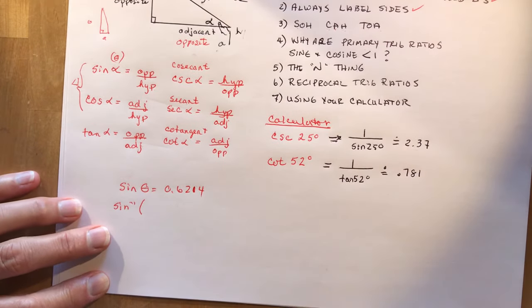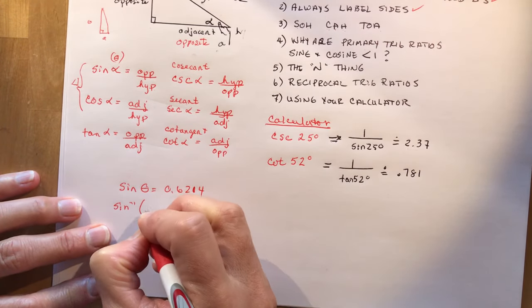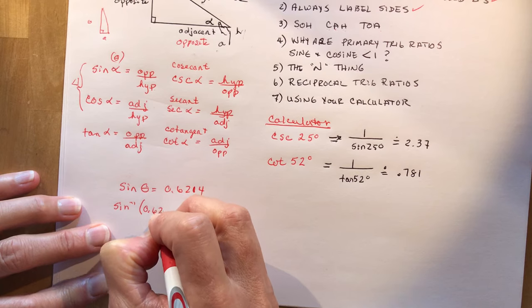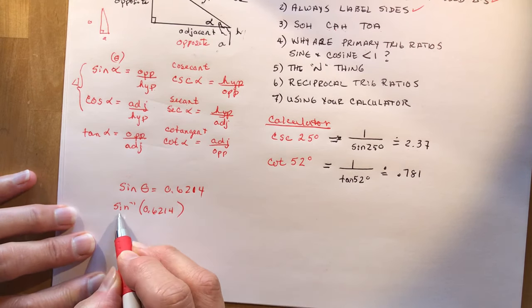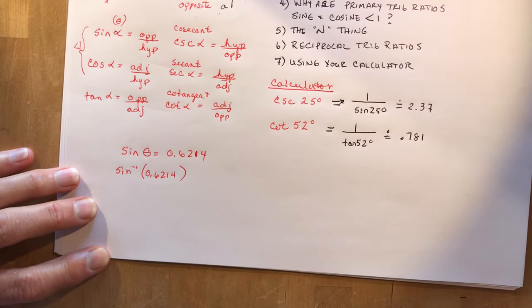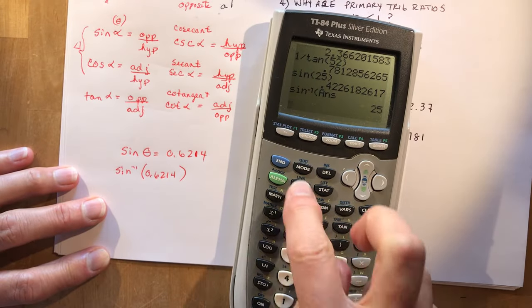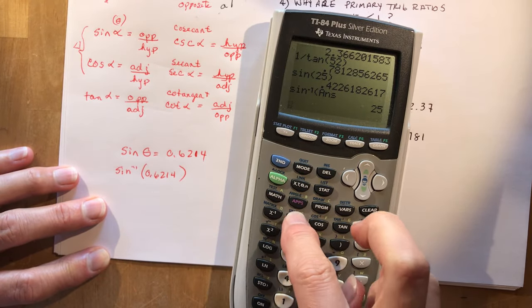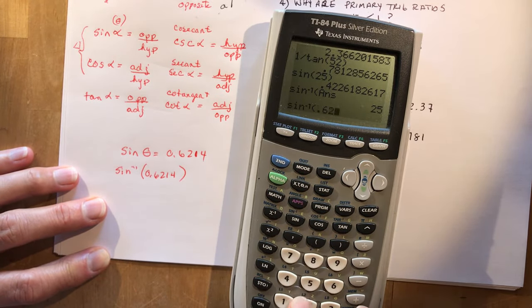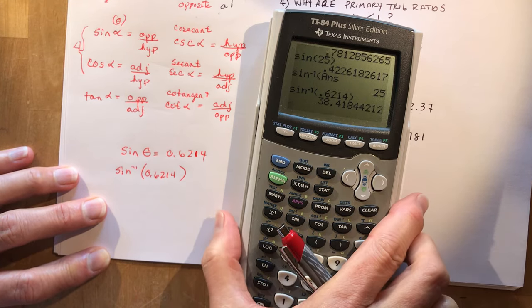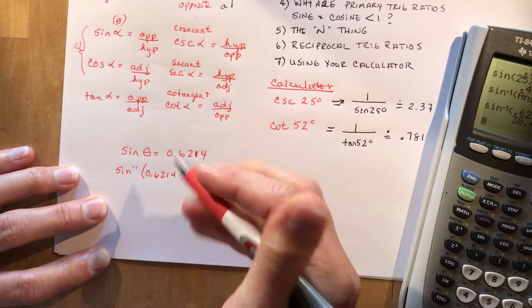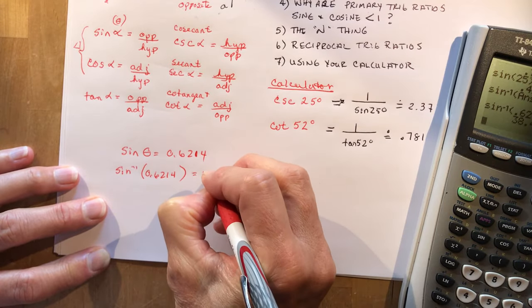So if I had this, if I said sine 0.6214, I would write it like this: sine negative 1 of 0.6214. So second sine of 0.6214 equals, and I get degrees, 38 degrees.